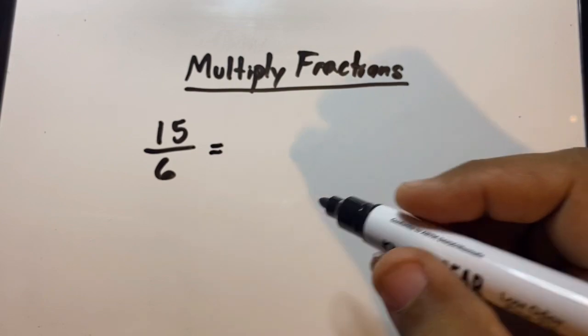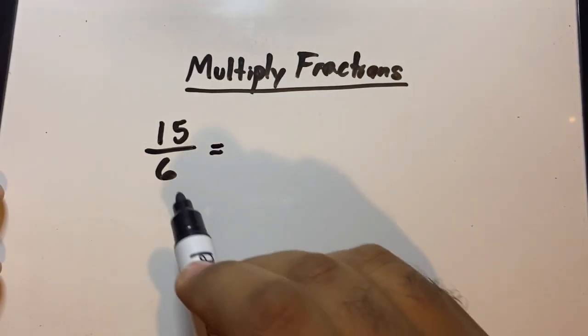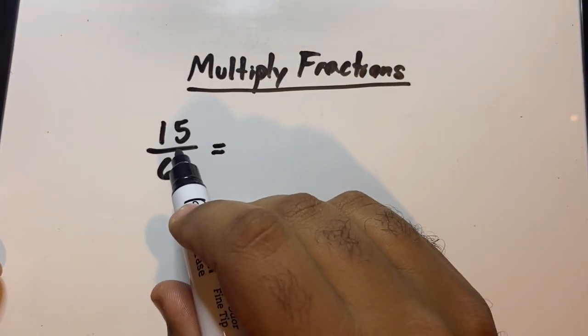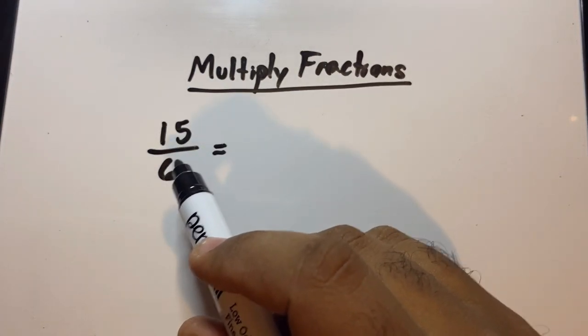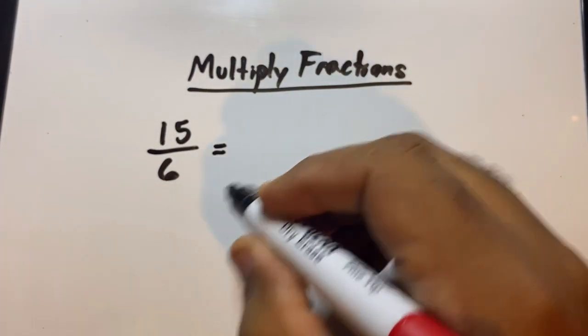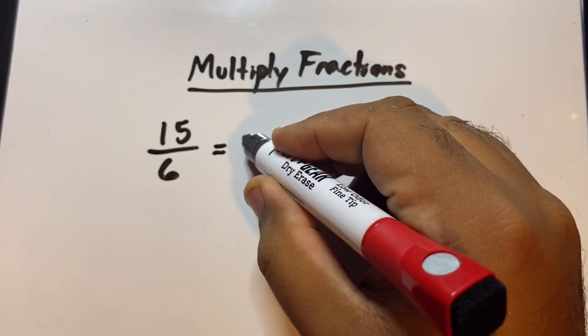How do we do that? That's very easy. You have to divide. How many times can this six go inside 15? If you've done your multiplication tables, you know that six can fit inside 15 only two times, so that two is the whole number.